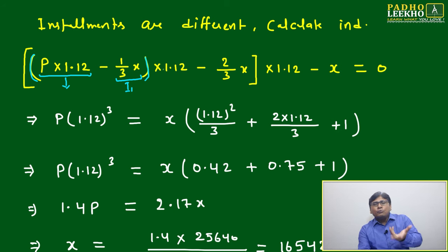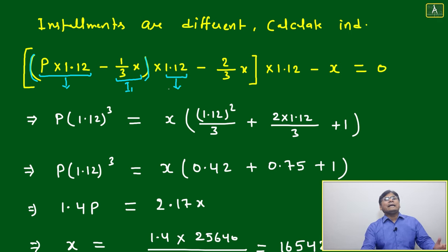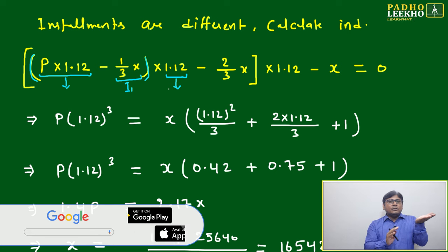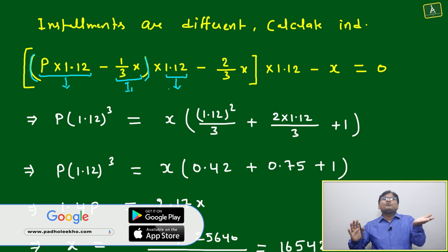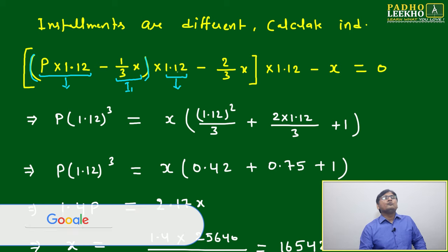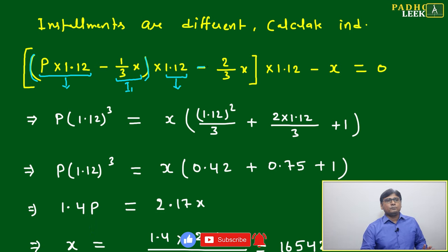This is a small bracket. After one year, means at the end of the second year, again you have to multiply with 1.12, because again after end of two years, first year and after end of two years, means there's a one year gap. This amount will get the interest of 12%, 1 times 1.12. Now after the end of the second year, you are paying the second installment, that is your I2. Means we have to subtract that. The total will be put in a big bracket.